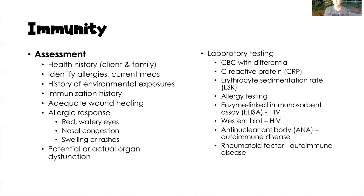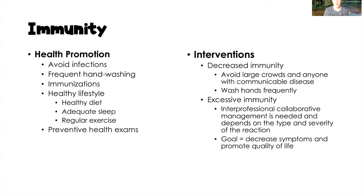For laboratory testing, a CBC with differential allows us to look at all immune properties and different white blood cell functions. C-reactive protein (CRP) and erythrocyte sedimentation rate (ESR) are always elevated when the immune system is activated, indicating infection or inflammation. We can also do allergy testing, an ELISA or Western blot test (which are specific tests for HIV), the anti-nuclear antibody (ANA) test for autoimmune diseases — a positive ANA often indicates an autoimmune disorder — and rheumatoid factor, also an indication of autoimmune disease.